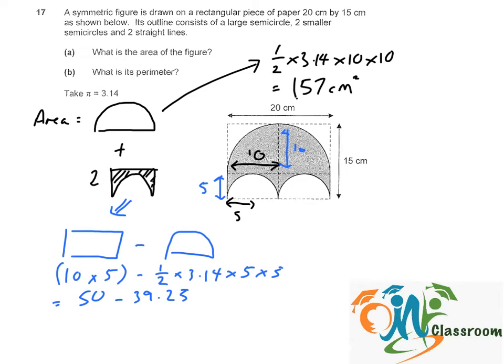That will give us 10.75cm squared. So the total area of the figure will be 157cm, which is the area of the big semicircle plus 2 times the area of this shape, which is 10.75cm. And the answer will be 178.5cm squared.